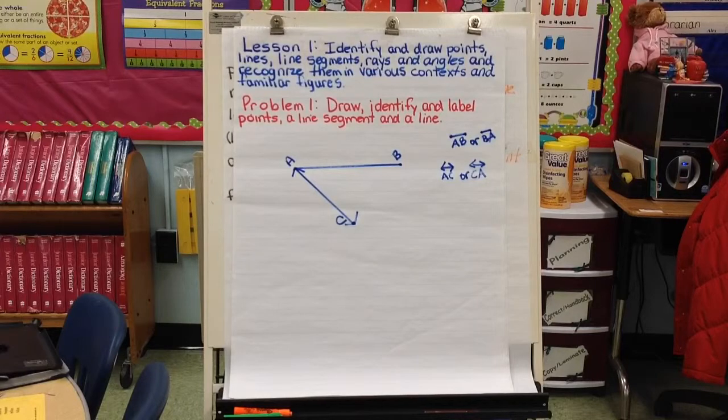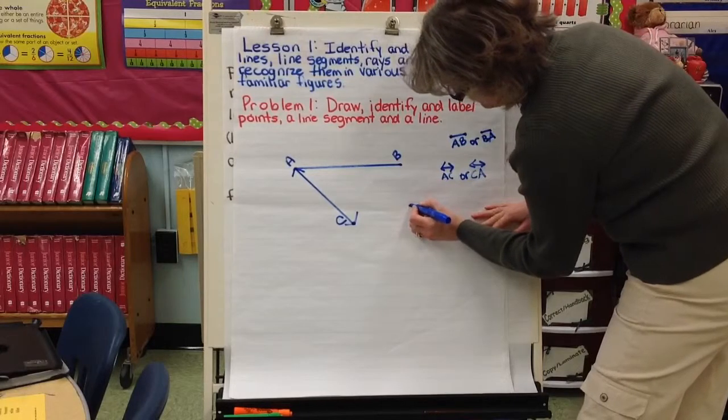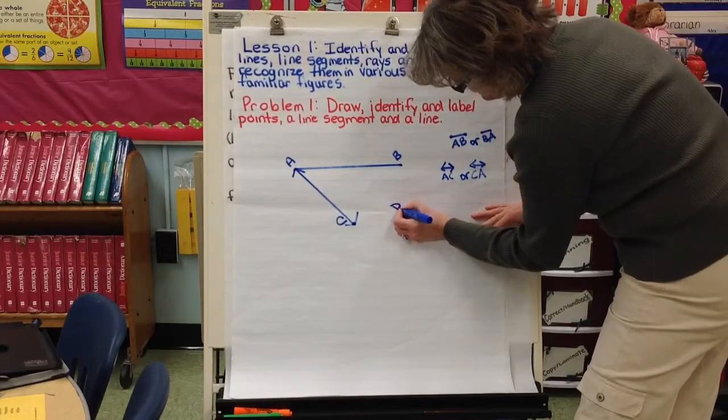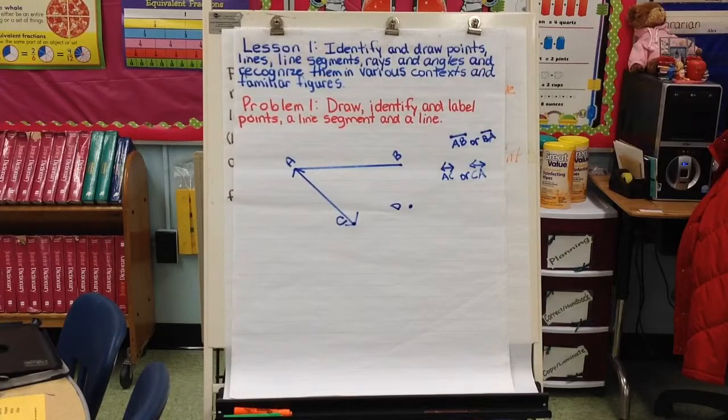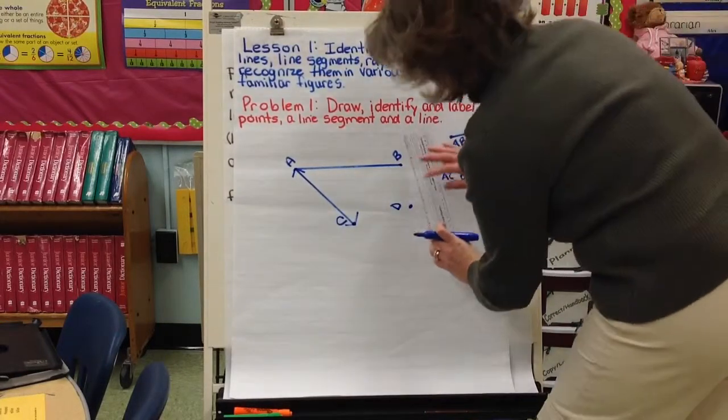We are going to draw another point. And this point is not going to be on either A, C or A, B. This is going to be point D. I need to use my straight edge to connect.